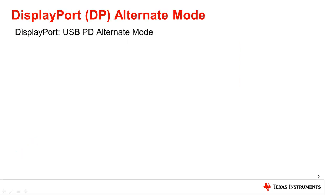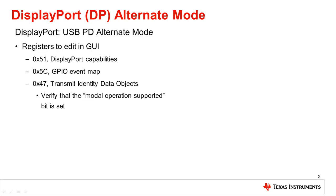DisplayPort is a USB PD alternate mode. In order to configure your TPS6598X device for DisplayPort, there are certain registers you will need to edit in the GUI. Register 51 will configure the DisplayPort settings, and Register 5C will change the pin inputs and outputs that need to match the DisplayPort configuration.